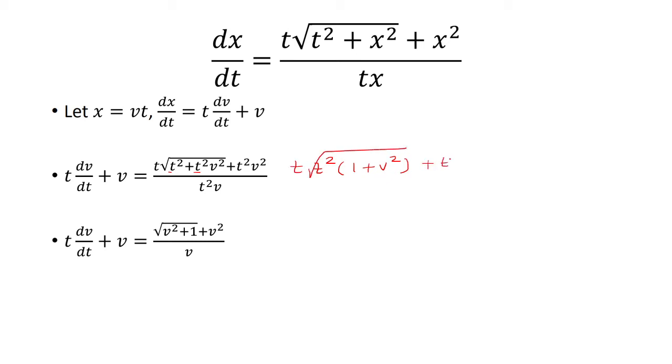And then you have t squared v squared all over t squared v. This t squared is going to come out as just t, because the square root of t squared is t. t times t is t squared. We have t squared times square root 1 plus v squared.